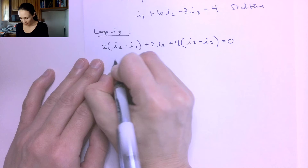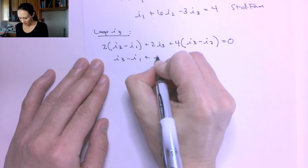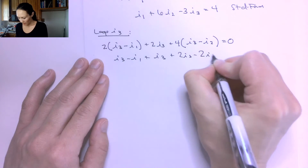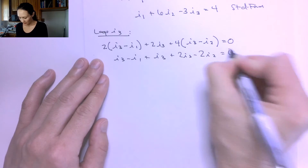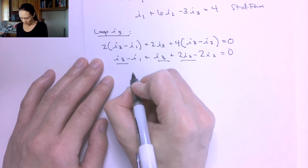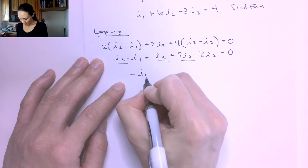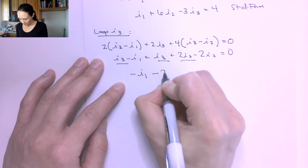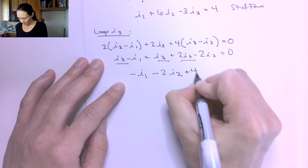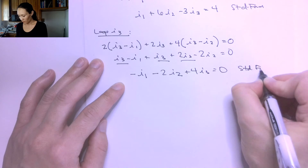Dividing everything by 2: (I3 minus I1) plus I3 plus 2(I3 minus I2) equals zero. Combining the I3 terms gives: negative I1 minus 2I2 plus 4I3 equals zero. This is already in standard form.